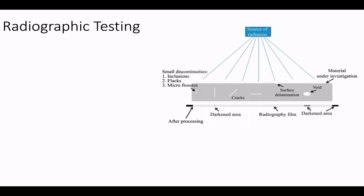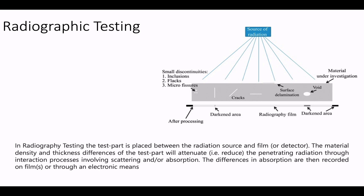Radiographic testing is a non-destructive testing method which uses either X-rays or gamma rays to examine the internal structure of manufactured components and identify any flaws or defects. In radiographic testing, the test part is placed between the radiation source and film. The material density and thickness differences of the test part will influence the penetration of radiation through interaction processes involving scattering and absorption. The differences in absorption are then recorded on film or through electronic means.